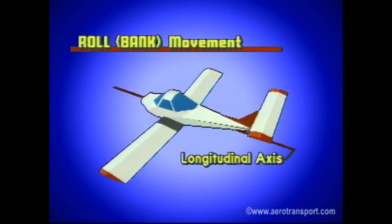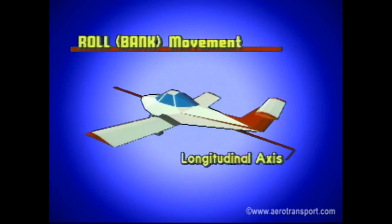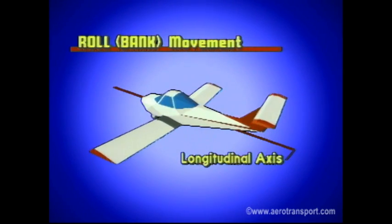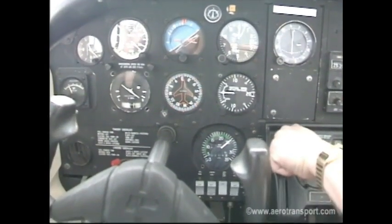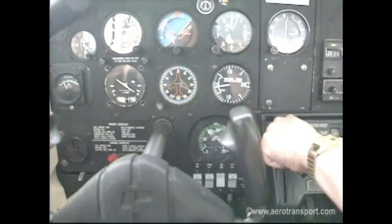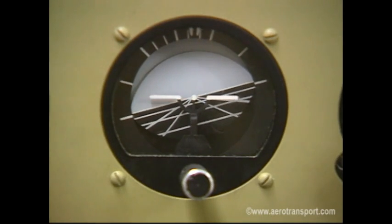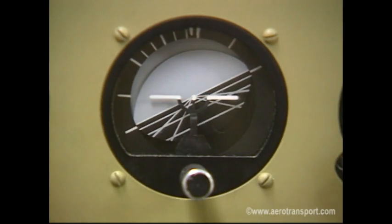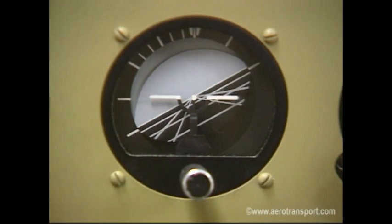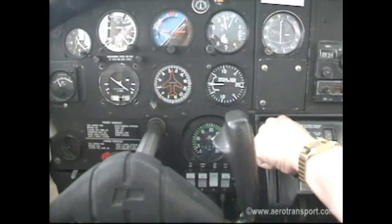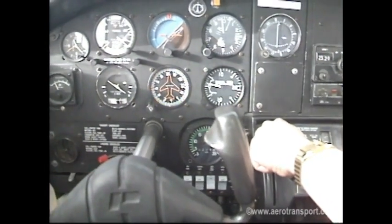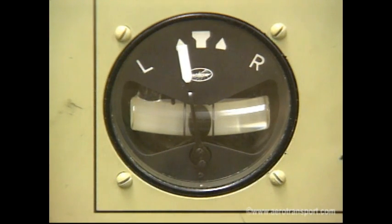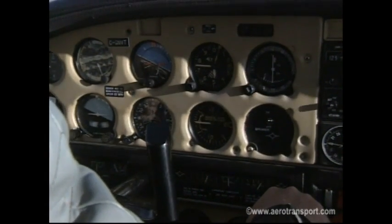Bank attitudes refer to the attitude of the wings relative to the datum. It is caused by the rolling movement of the aircraft around the longitudinal axis, and is produced and controlled by the ailerons. When an aircraft is banked, the aircraft in the attitude indicator will be banked in relation to the horizon bar. The turn and bank indicator needle will be deflected in the direction of the turn. In a coordinated turn, the ball will be centered and the heading indicator will show a change in direction.